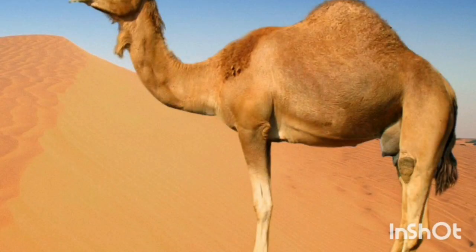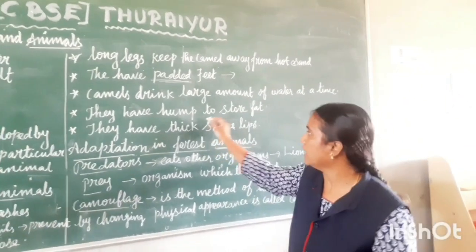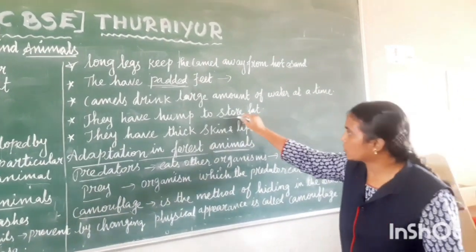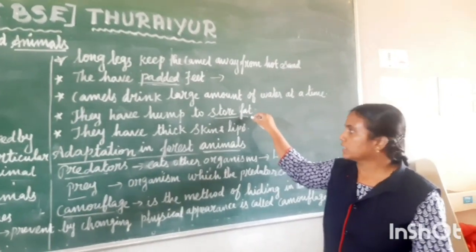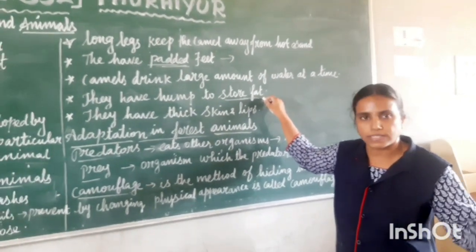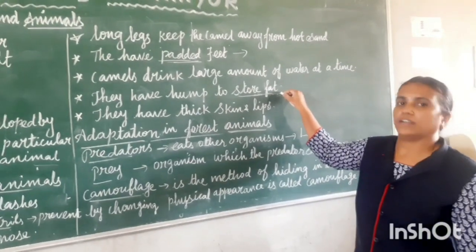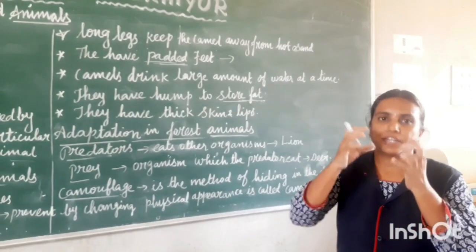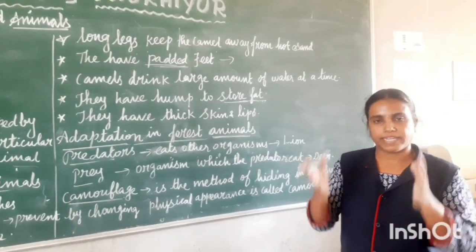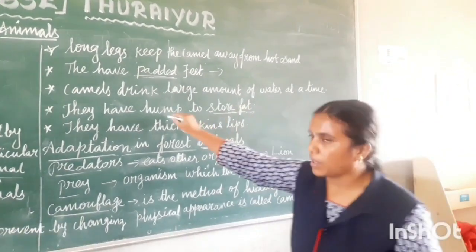Camels have a hump which is used for storage of fat. They store fat in the hump, not water. Because they live in a food shortage area, whenever they go on a long journey, the stored fat gives them energy. While using the fat from the hump, the hump size gets reduced. It will regain its normal size by eating food again.